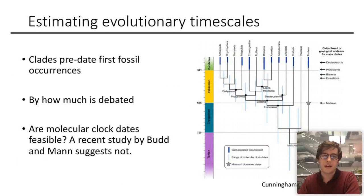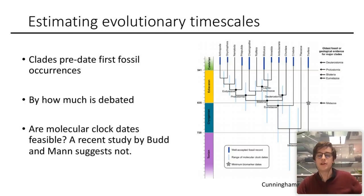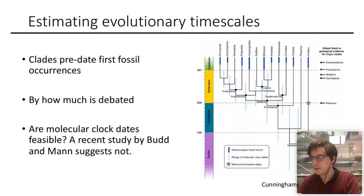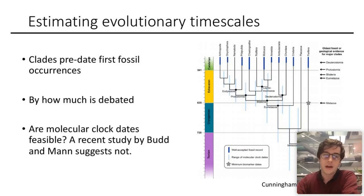As many of us know, estimating evolutionary timescales is a challenging prospect. We know that the first occurrence of a fossil from a clade means that the clade must predate this age, but by how much is debated. So are molecular clock estimates of divergence times, which regularly predate the fossils by some distance, feasible? Some recent work by Graham Byrd and Richard Mann suggests they are not.